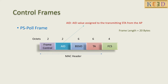AID is the association ID of the station that is assigned by the AP. After receiving the PS-Poll frame, all the stations in the BSS update their NAV to equal SIFS plus TX time for ACK.